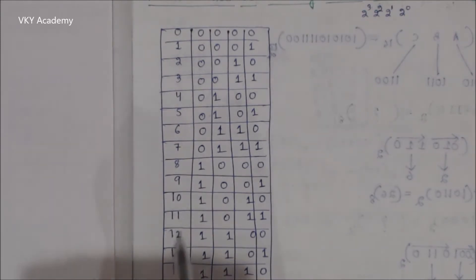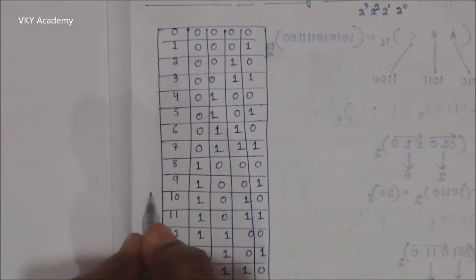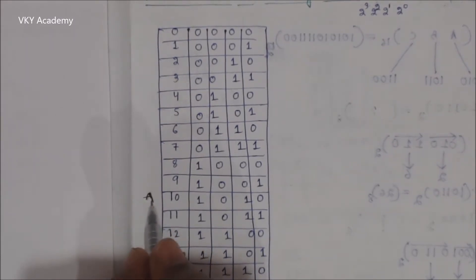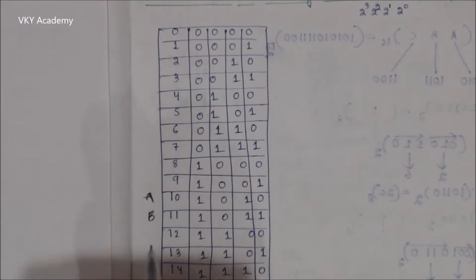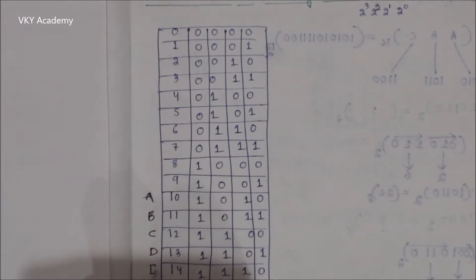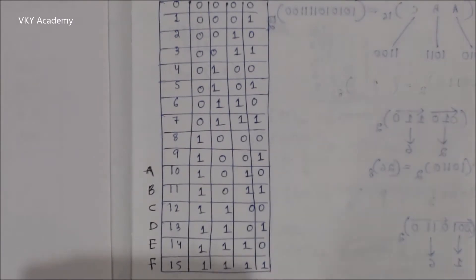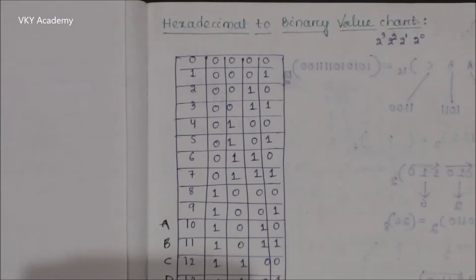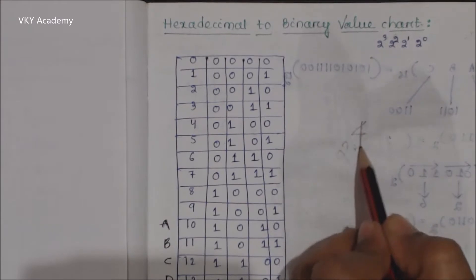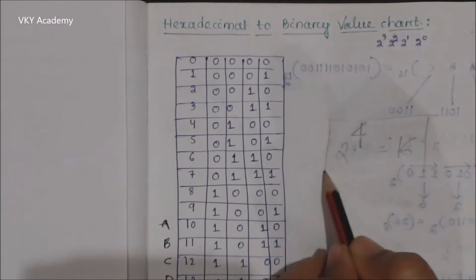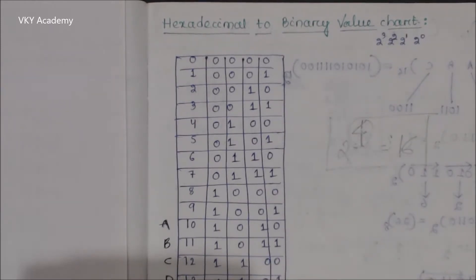Then the next values are 10, 11, 12, 13, 14, and 15. The digit 10 is represented with the alphabet A, 11 is represented with B, 12 with C, 13 with D, 14 with E, and 15 with alphabet F. So these are the representations of hexadecimal number system from 0 to 15, a total of 16 numbers. We can say 2 to the power 4 is equal to 16, that is why we take a group of 4 bits for hexadecimal number system.